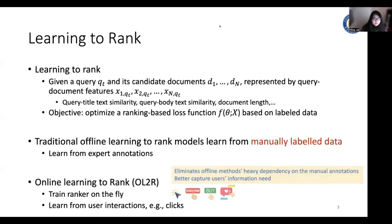And recently, online learning to rank has attracted a lot of attention. It directly trains a ranker on the fly by learning from user interactions, for example, users' clicks. It eliminates offline methods' heavy dependency on the manual annotations, and it can better capture users' information needs.